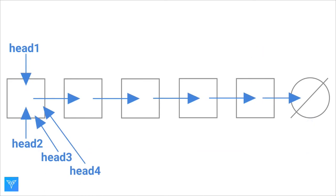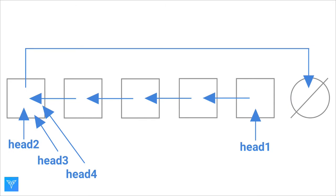We might have a lot of different references to our linked list before we reverse it. If we call reverse head one, we might update head one, but all our other references are stuck at the end of our linked list.